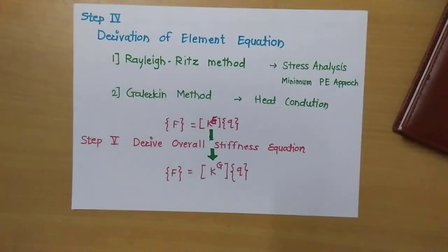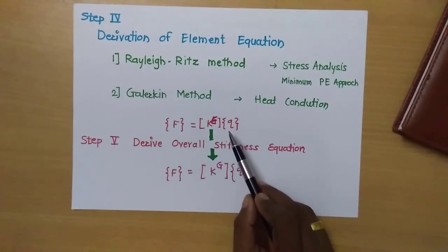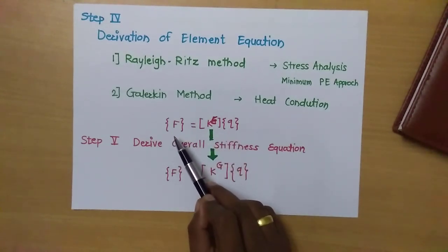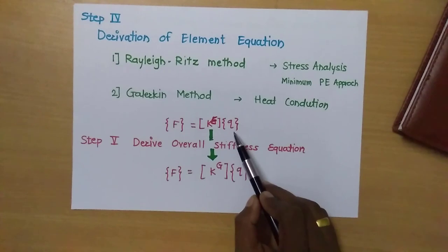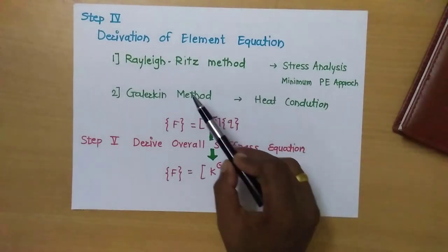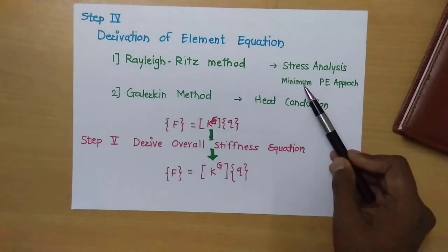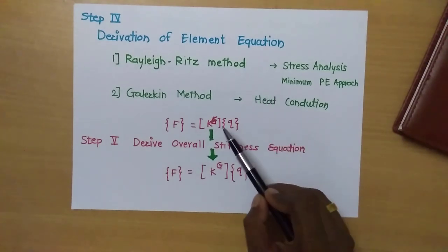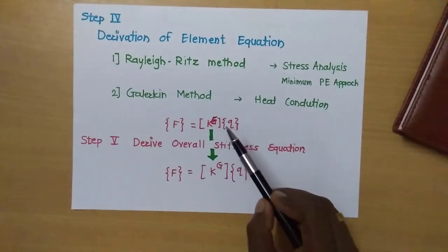The fourth step is derivation of element equations. We must define each element with its own equation — however many elements there are, that many equations are to be formed. The equation is: force vector equals stiffness of the element multiplied by displacement vector. Two methods are mostly used: the Rayleigh-Ritz method and the Galerkin method. Where stress analysis is required, we use the minimum potential energy approach in the Rayleigh-Ritz method; otherwise we use the Galerkin method. For each element we get force equals stiffness times displacement.